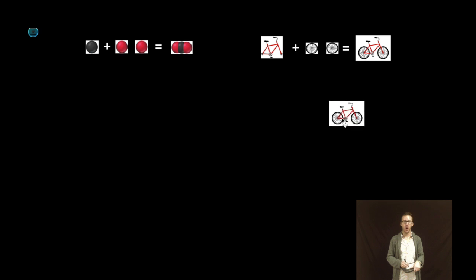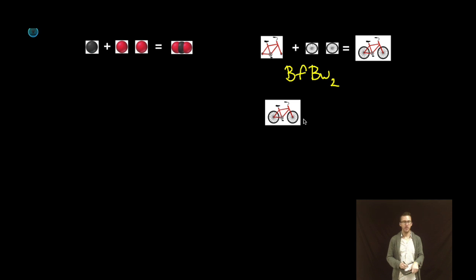Now if I had just one bicycle, recognize within the one bicycle I have one bicycle frame and two bicycle wheels. So if I were to write a formula, I might come up with bicycle frame BF, bicycle wheels BW2. Now one bicycle is fun, 12 bicycles a heck of a lot more fun.